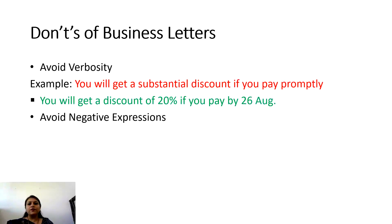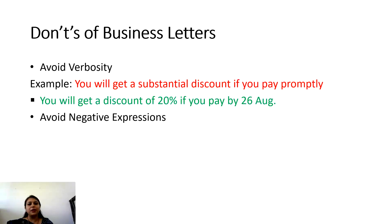Avoid verbosity. For example, instead of 'you will get a substantial discount if you pay promptly,' write 'you will get a discount of 20 percent if you pay by 26 August.' This is more concrete — 'substantial' is vague and could mean 10%, 5%, or 2%, whereas specifying the exact amount removes ambiguity. Always avoid excessive verbs or verbosity in your sentences.